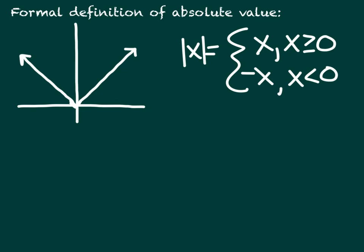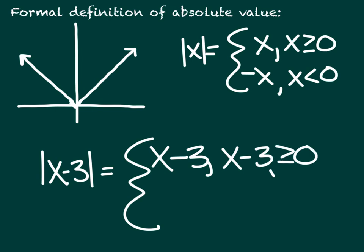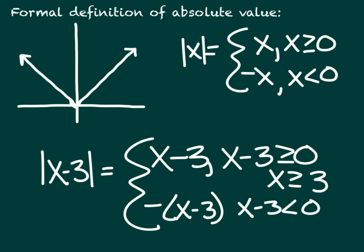I just arbitrarily put the equal sign on the top piece — it can be on either one, just not both. What I'm pointing out is that the absolute value of x gives the positive values for x ≥ 0 and negative x for x < 0. So for example, the absolute value of x minus 3 equals x minus 3 for x minus 3 ≥ 0 (i.e., x ≥ 3), and negative (x minus 3) for x minus 3 < 0 (i.e., x < 3).